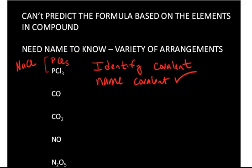With molecular compounds, we can have varieties of ratios because we're not forming full positive and full negative charges — rather we're sharing pairs of electrons. In ionic compounds, the charge depended on the position on the periodic table and achieving a noble gas configuration. In covalent compounds, which we will practice later with Lewis structures, the bonding is again dictated by satisfying the octet rule, but it is achieved by sharing electrons rather than donating or gaining them.